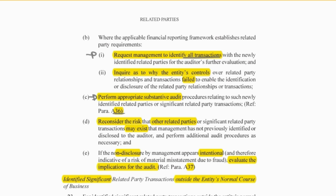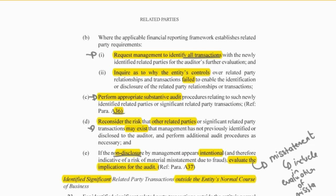We then have to consider if there are any other related parties that exist that haven't been disclosed. And if there is non-disclosure — so we've identified this transaction and they still haven't disclosed it after we've become aware — we have to consider the implications for the audit. Ultimately, there is a misstatement, and this would need to be included in our evaluation of misstatements. That's why I've said we're leaving the evaluation of misstatements to the end — if there is a misstatement identified with related parties, we have to include it in that evaluation.